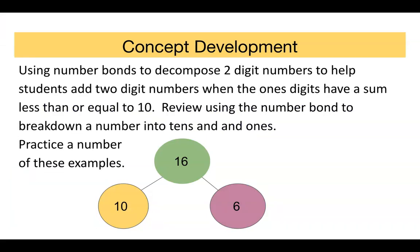So before you start with this lesson, I would review the number bonds and how we use them to decompose two-digit numbers. And this will help our students add the two-digit numbers when the ones digits have a sum less than or equal to 10. So review the number bonds and how we use them to break down a number into tens and ones. I'm giving the example here of 16, which can be broken down into tens, 1 ten and 6 ones. You can do 26, you can do 35, but always showing that we are breaking it down to tens and to ones.